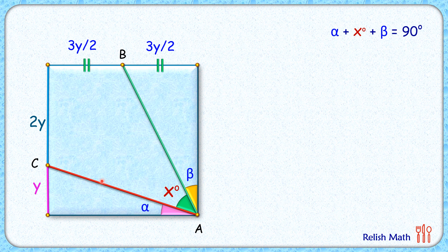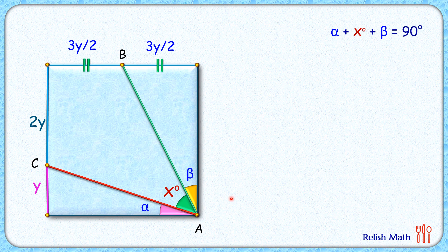Now let's do a magic here: let's make a copy of this square and rotate it 90 degrees clockwise along the point A.